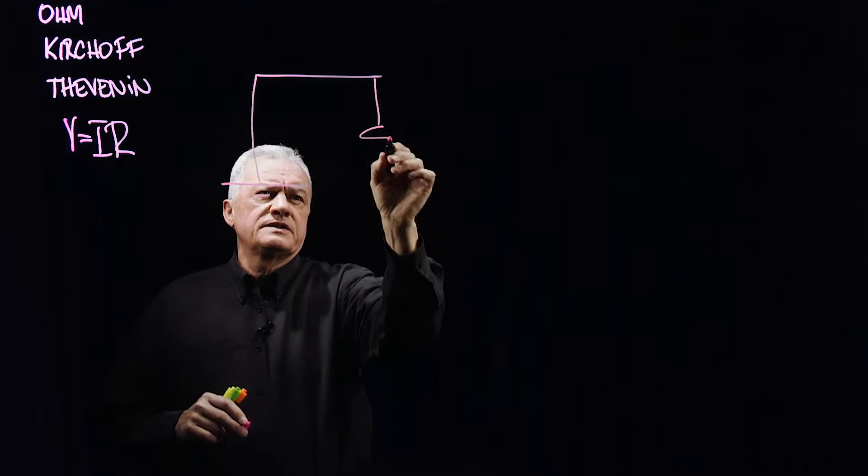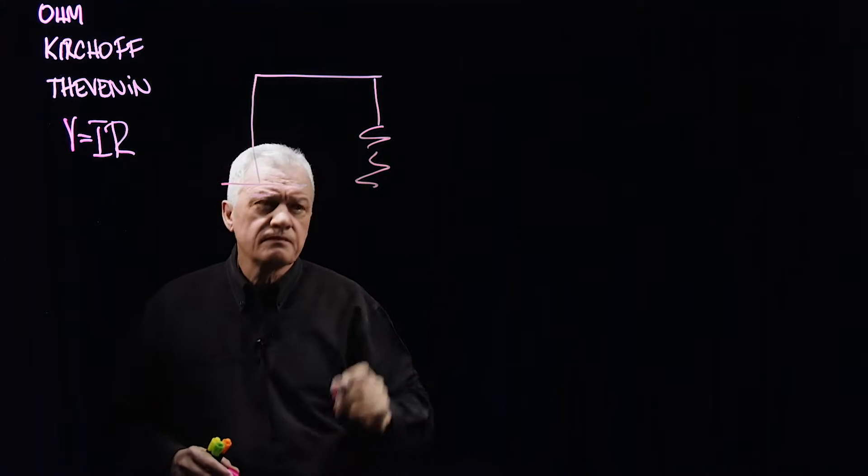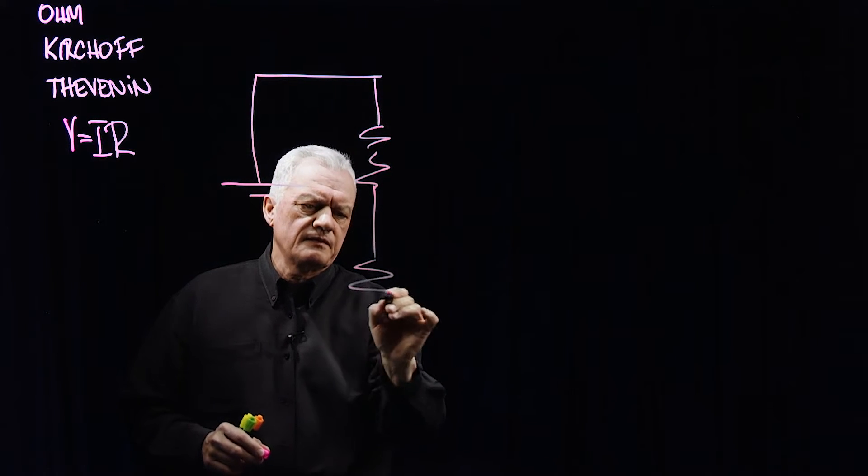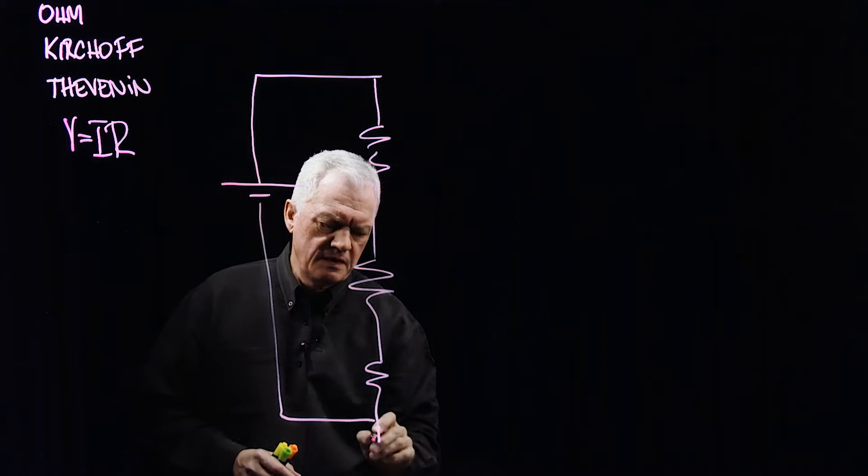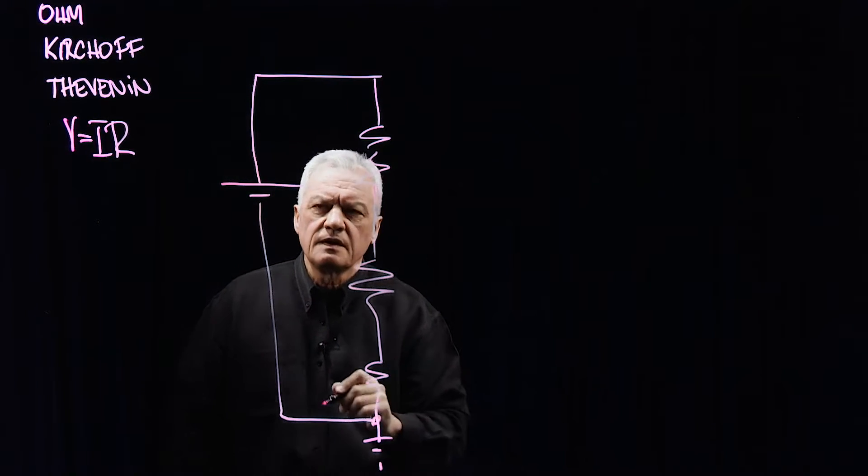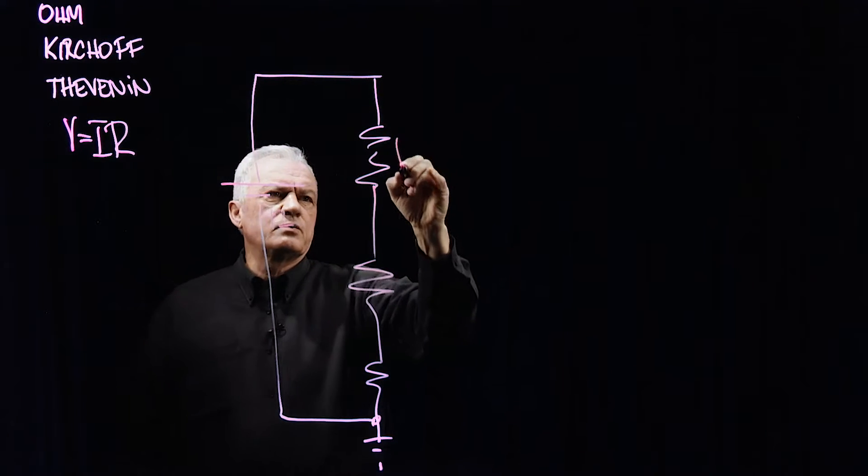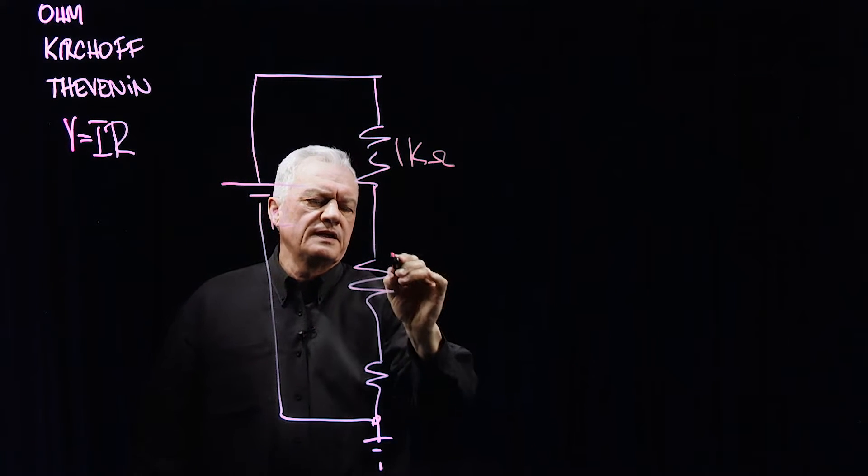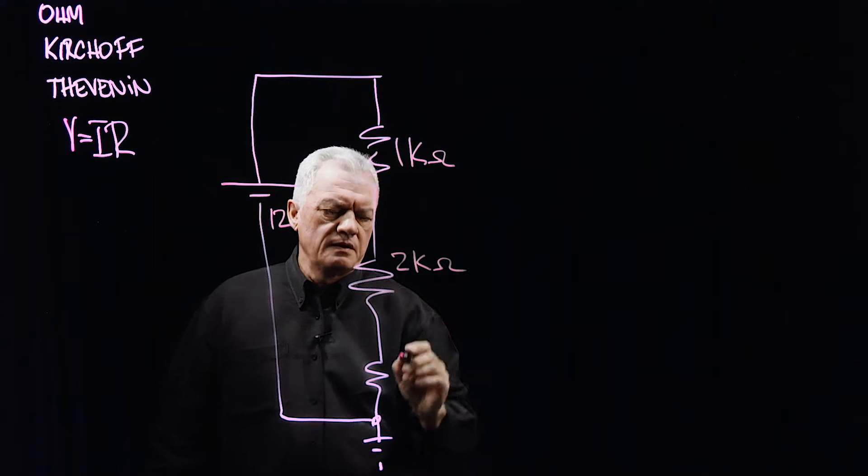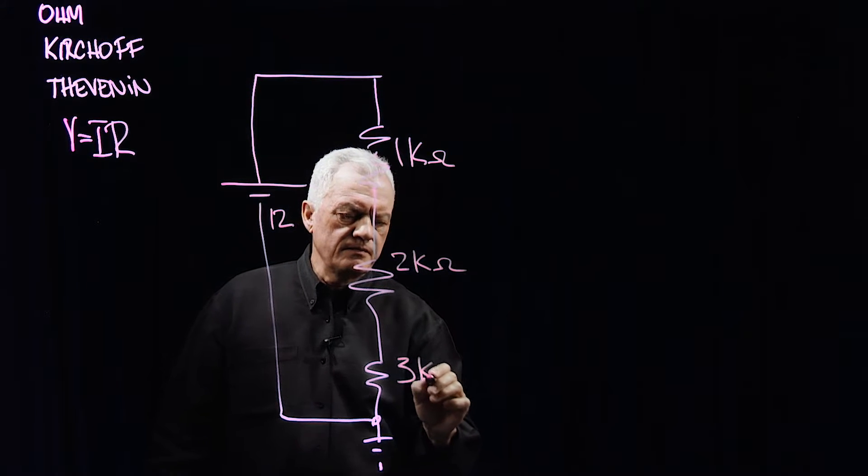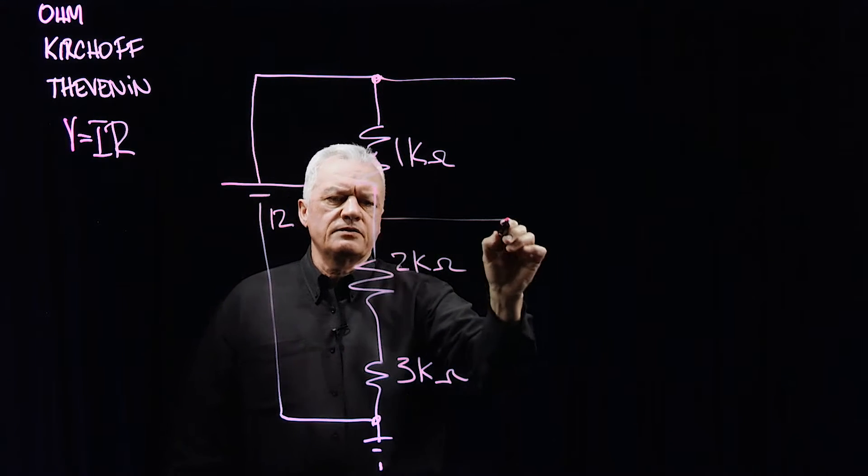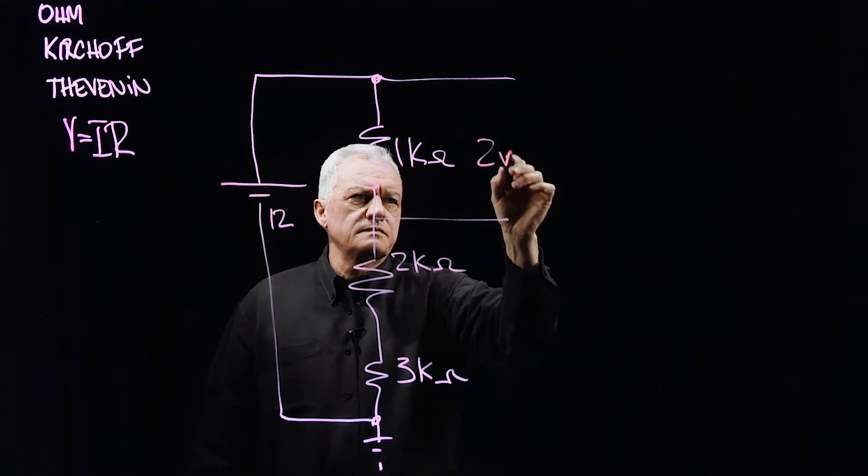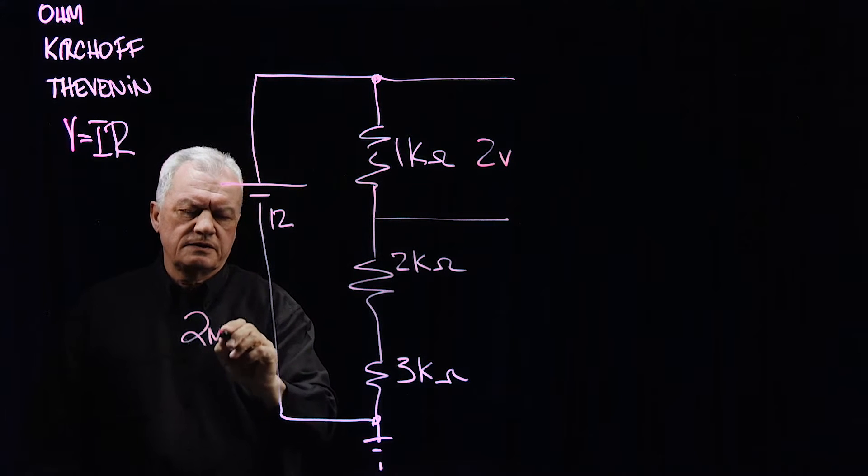We had that three resistor circuit. Let me come down here and we had 12 volts. We had 1K Ohm, we had 2K Ohm and we had 3K Ohm. And as we remember, we had across here, we had 2 volts because we had 2 milliamps going through the circuit.